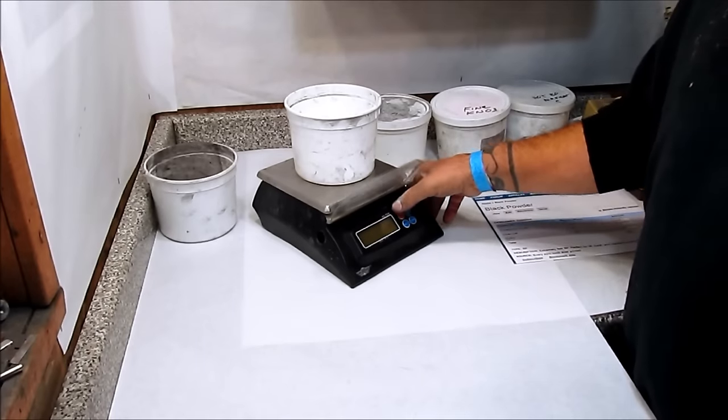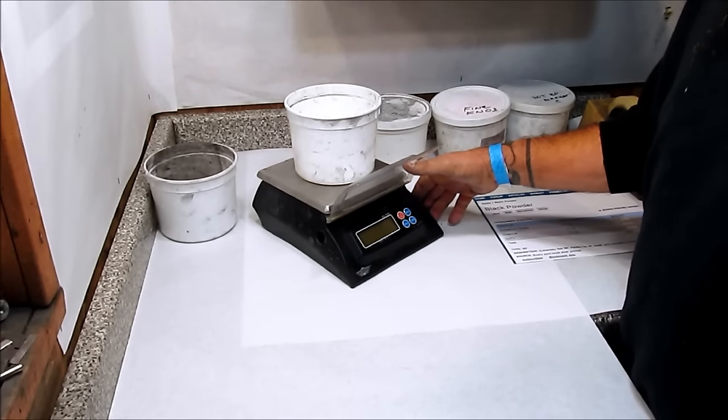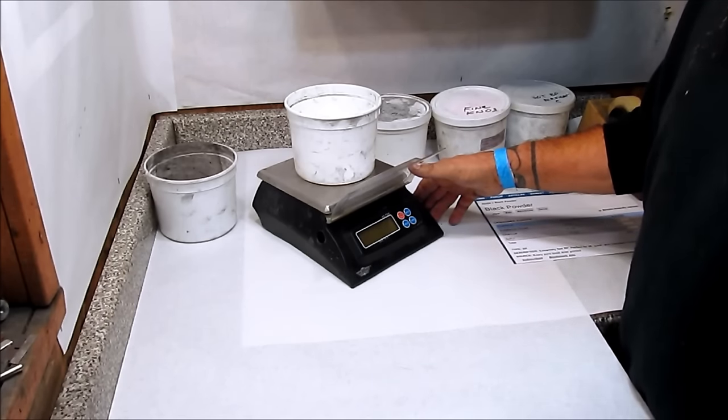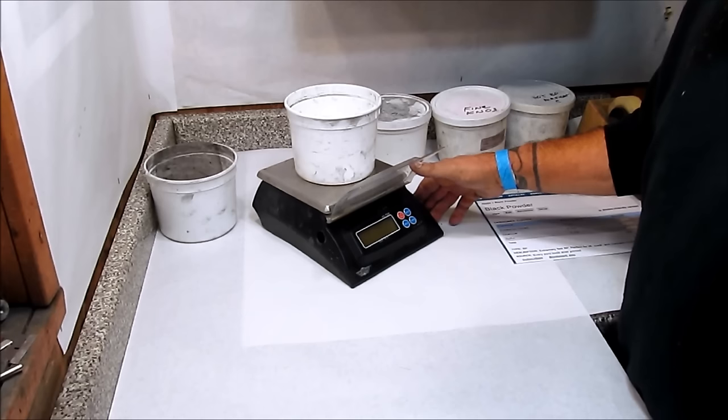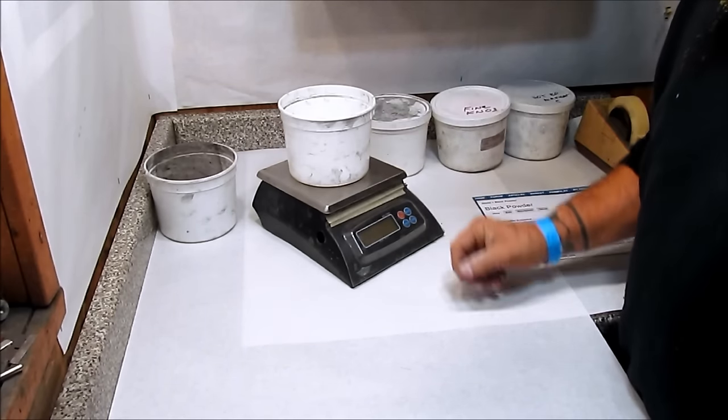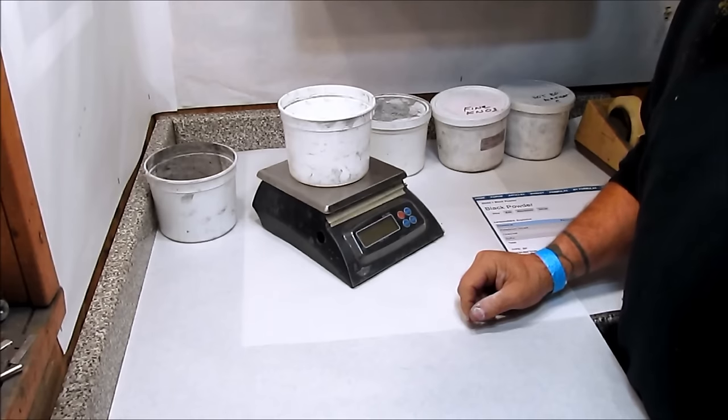The KD-8000 refers to the number of grams the scale will weigh. 7000 grams is 15.4 pounds. The KD-8000 will weigh 17.6 pounds of composition. That includes the weight of the tub that's on there, so it'll actually weigh a little bit less composition.